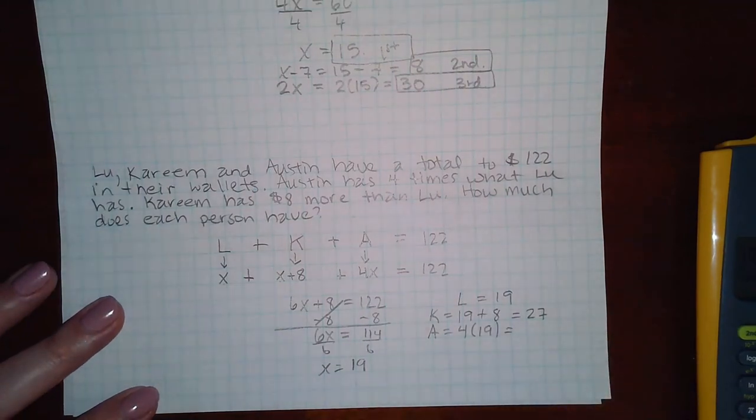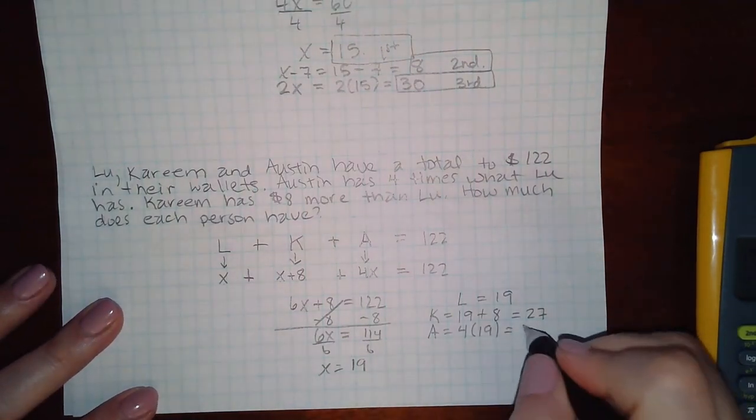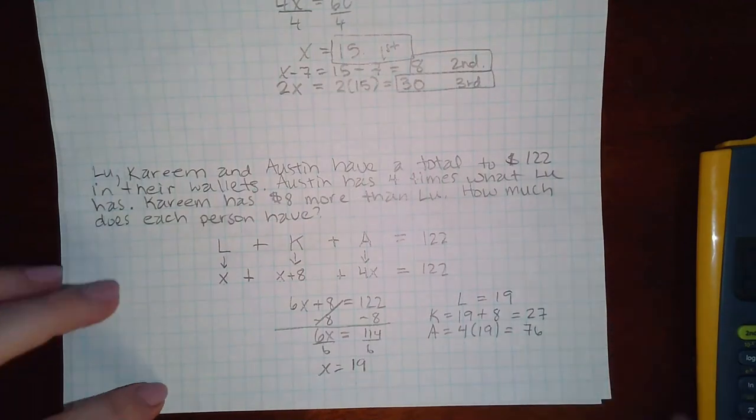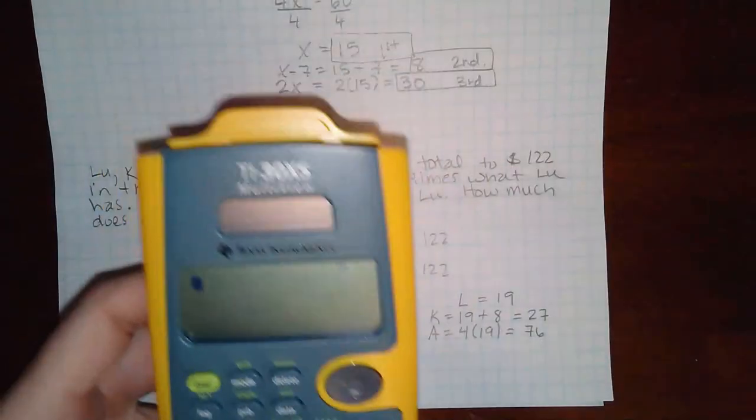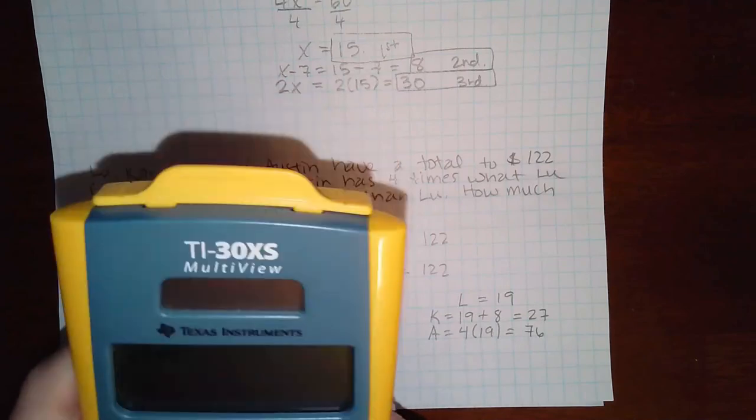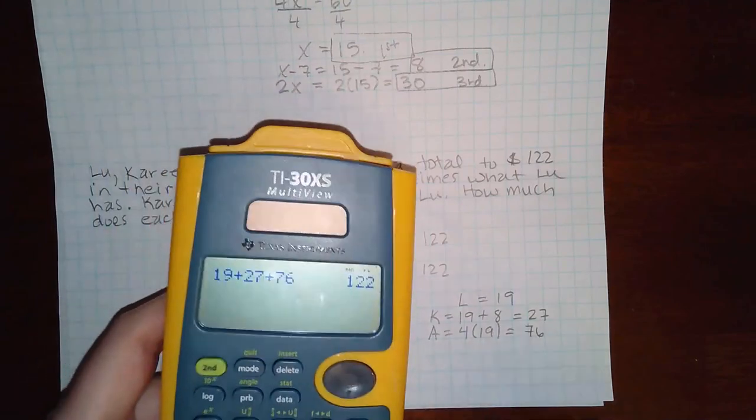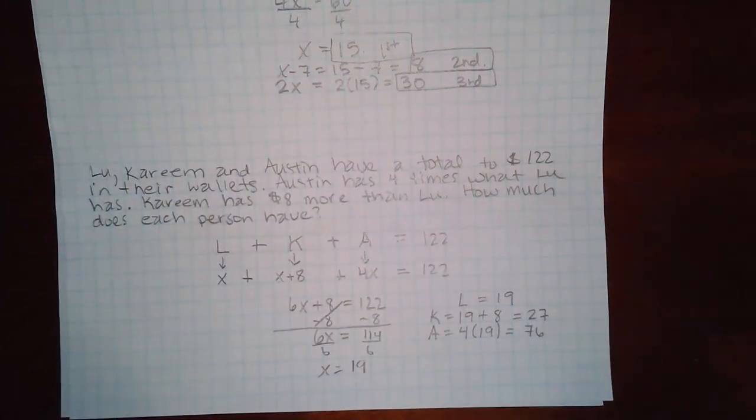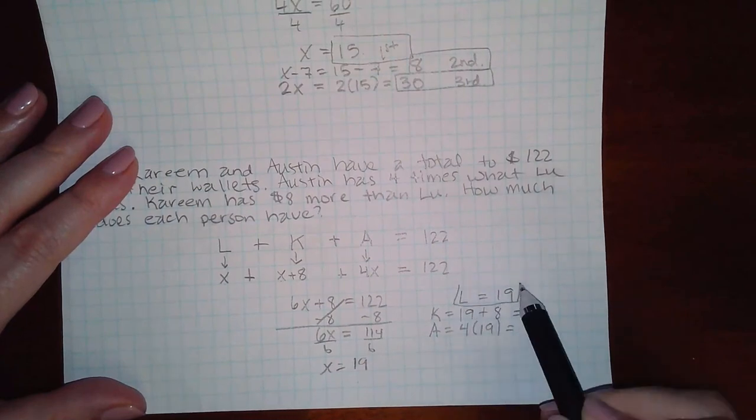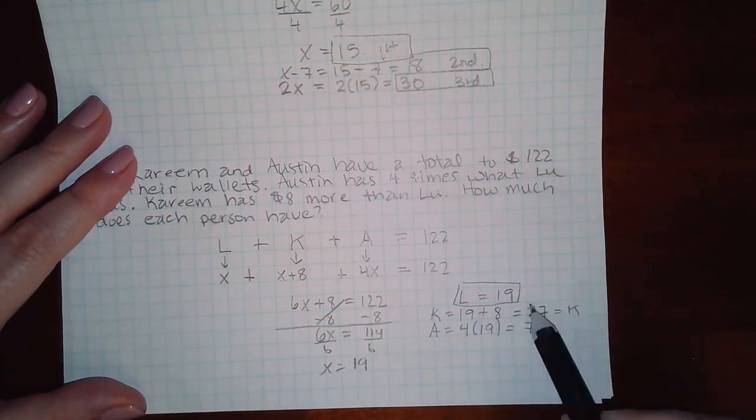And then Austin has four times what Lou had, which is 76. And then again, if you want to double check, 19 plus 27 plus 76 does come out to be 122. So these are the numbers you're going to use for Lou, Kareem, and Austin.